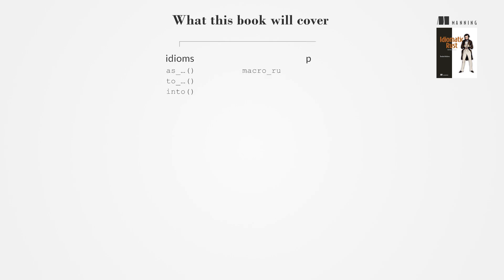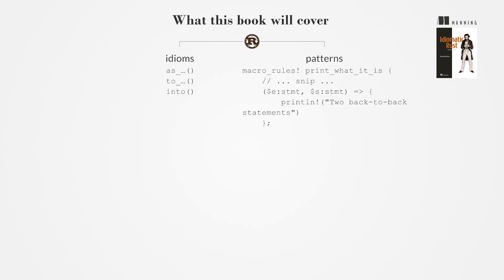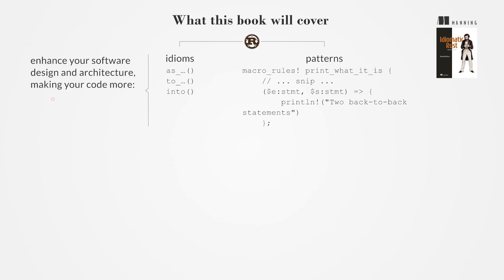The book covers a variety of idioms and patterns — some unique to Rust, and others adapted to its syntax and features. It aims to enhance your software design and architecture, making your code more efficient, maintainable, and scalable.